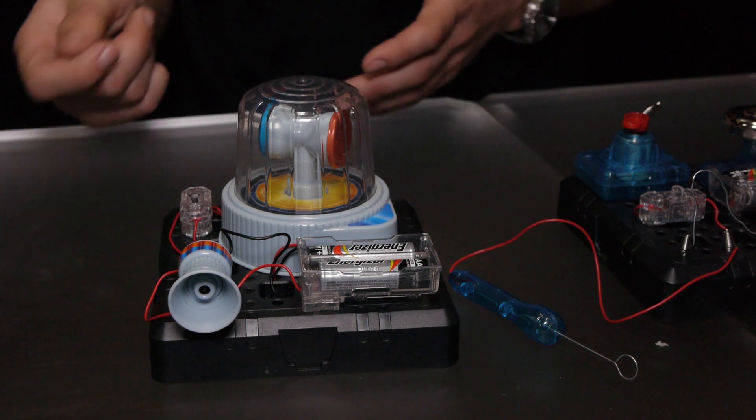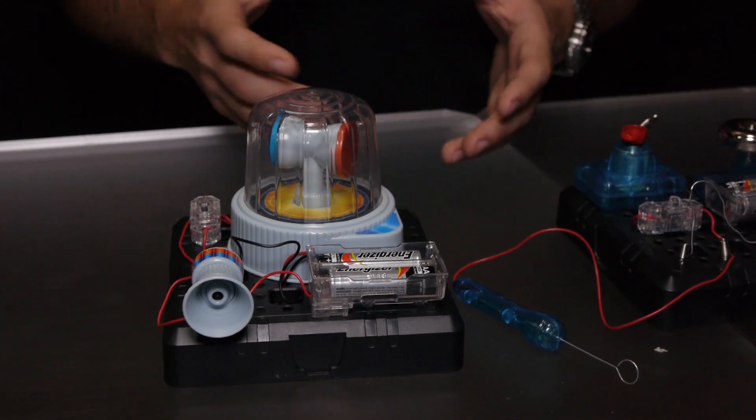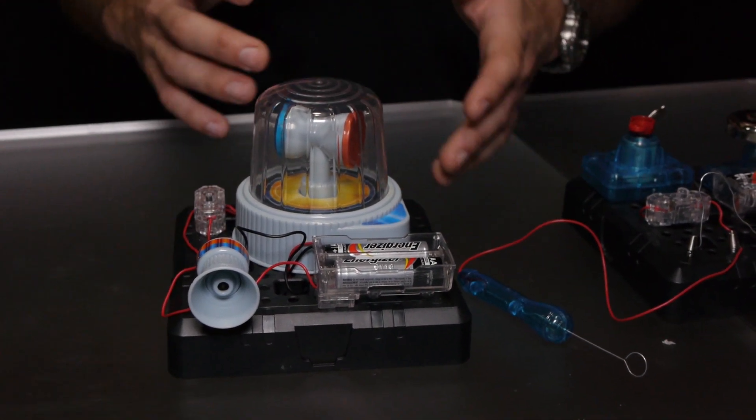If you want the sound out, just unplug the sound wire. If you want the light out, unplug the light wires. You have full control of this module.